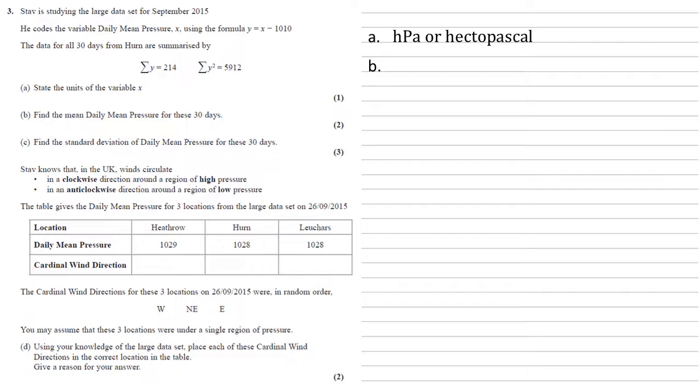For part B, we need to find the mean daily mean pressure for these 30 days. We're looking for the mean for x, but we've coded this into y. When we do the coding, if we're looking at the mean, we use exactly the same formula coding the mean as we do for coding the original variables. So y bar equals x bar minus 1010.